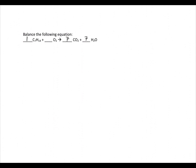Now we must balance our oxygen. We have 21 atoms of oxygen in our products but only two in our reactants. To balance an odd number, you can make your coefficient a fraction — in theory, 21/2 of oxygen. However, it is impossible to have half a molecule if you want a whole-number ratio. So we multiply the entire equation by two. The final balanced equation is: 2 molecules of heptene plus 21 molecules of oxygen forming 14 molecules of carbon dioxide and 14 molecules of water.